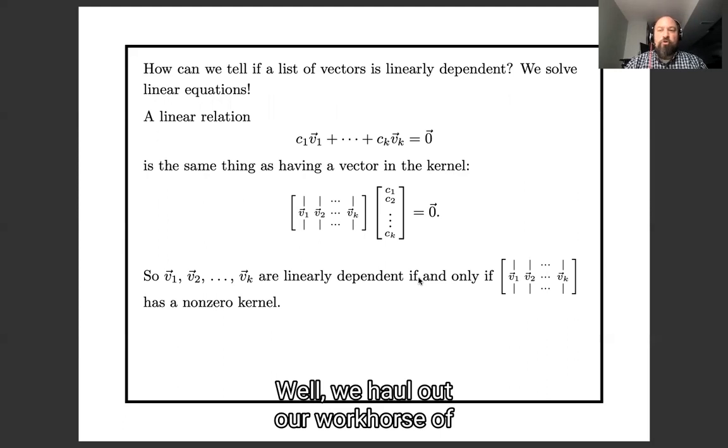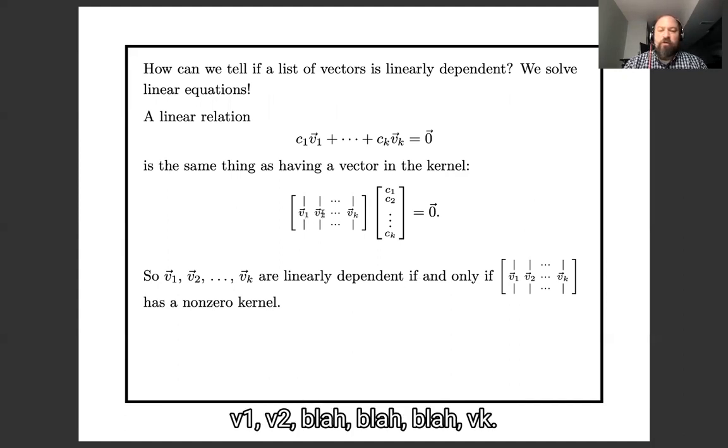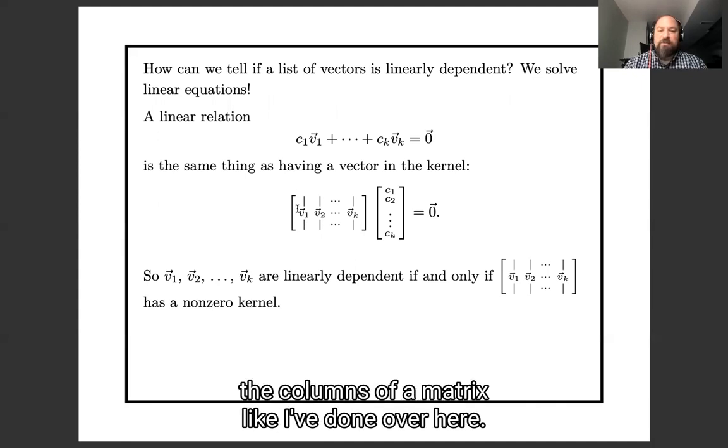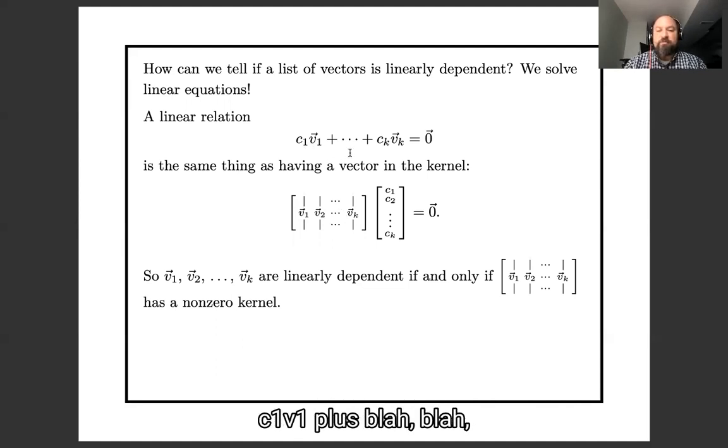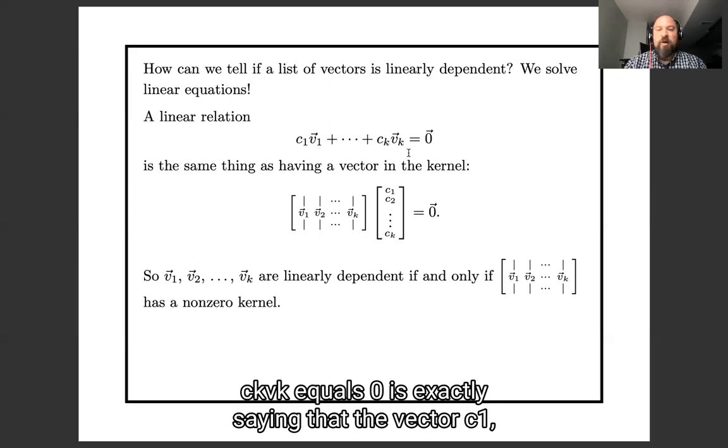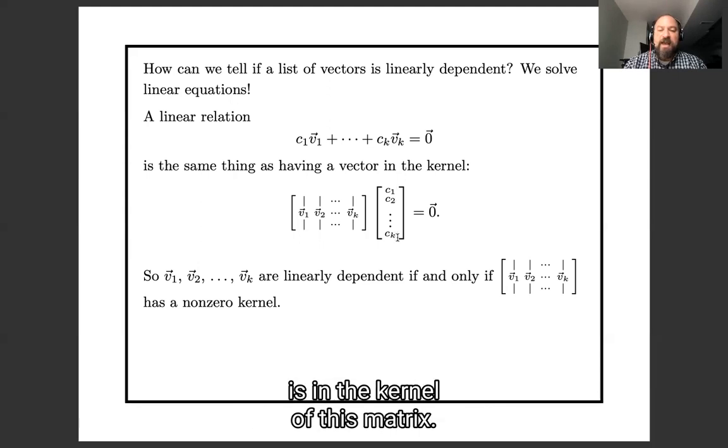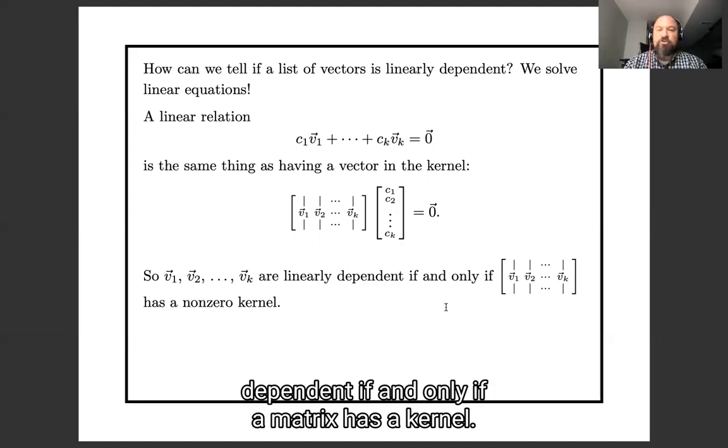Now how do we test whether a set of vectors is linearly dependent? Well we haul out that workhorse of an algorithm that we use over and over again, we solve linear equations. So let's say we have a list of vectors v1, v2, blah blah blah, vk. I'm going to organize them as the columns of a matrix, like I've done over here. Then a linear relationship between these vectors, c1 v1 plus blah blah blah ck vk equals zero, is exactly saying that the vector (c1, c2, blah blah blah, ck) is in the kernel of this matrix. So our vectors are linearly dependent if and only if our matrix has a kernel.